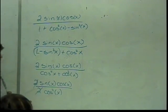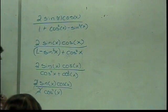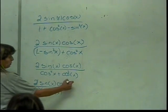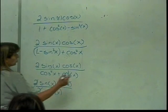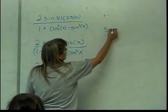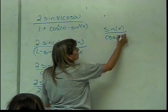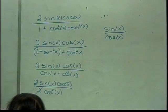The 2 and the 2 go, become 1. One of my cosines and my cosine squared goes with this one. So that becomes just sin(x) over cos(x).